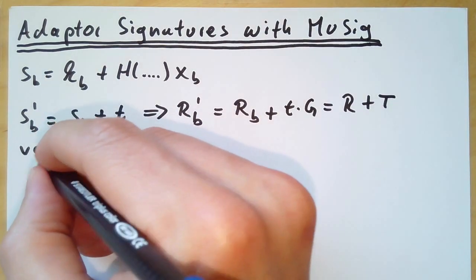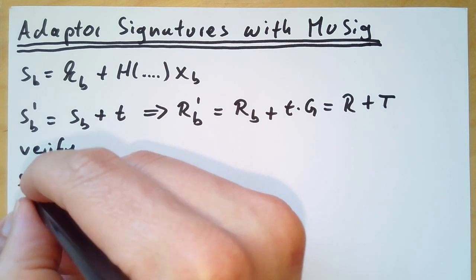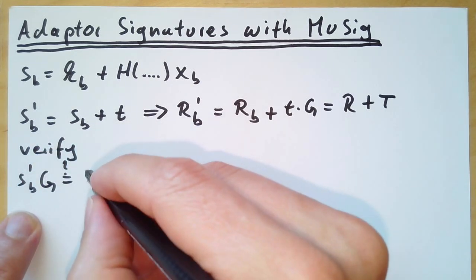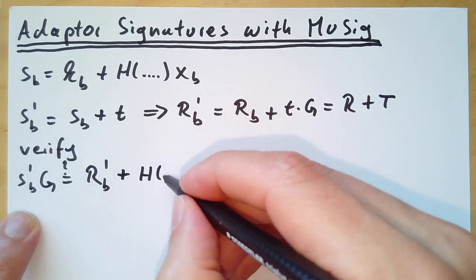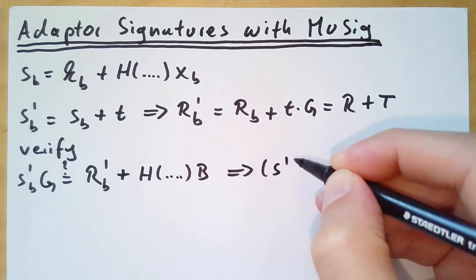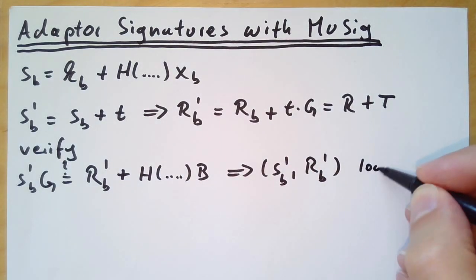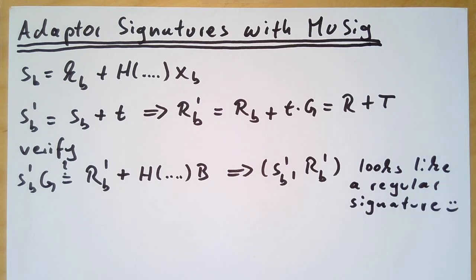I'm claiming that the verification equation looks like this: sb' times g has to be the same as rb' plus hash times the key b. And that sb' comma rb' is just a regular signature and looks like a regular signature.